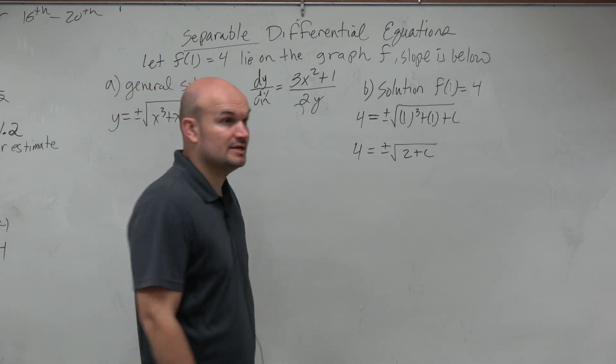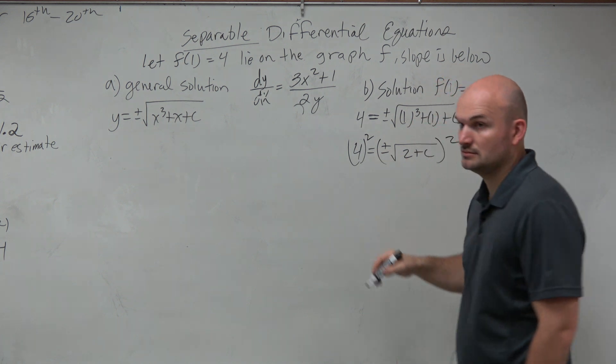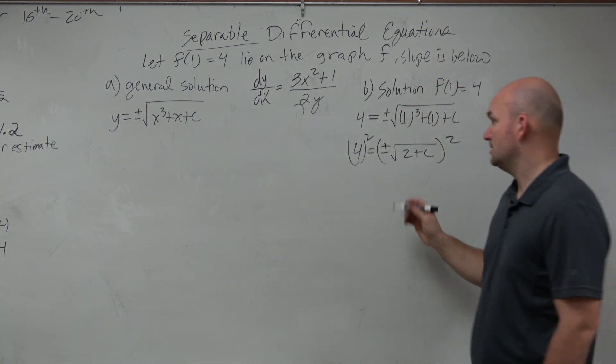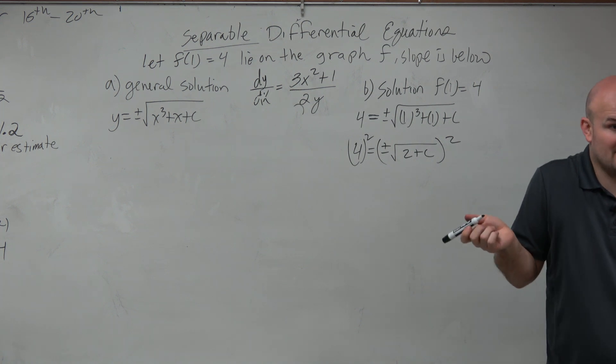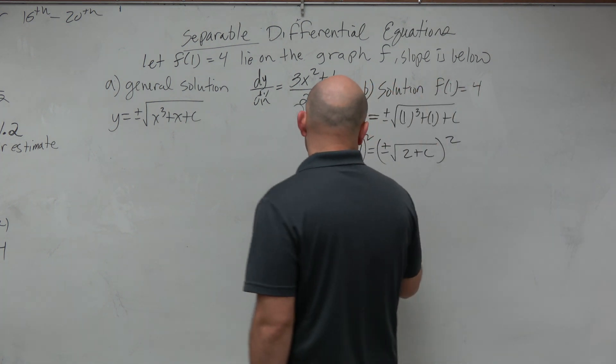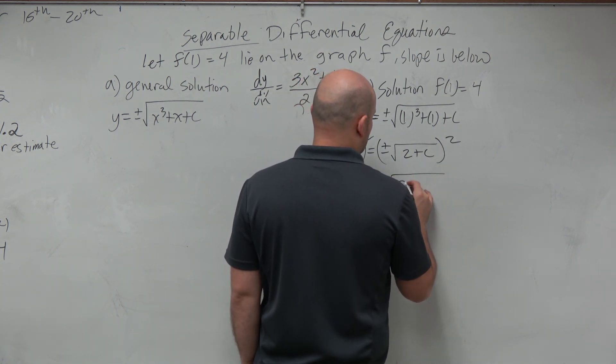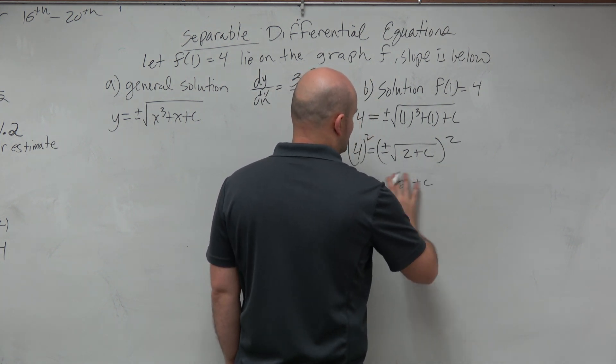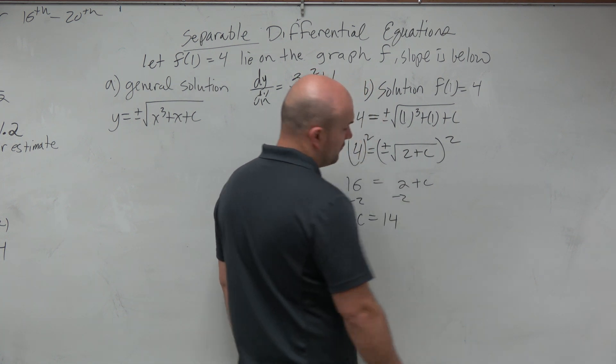Now, to undo the square root, I can just square, right? So it doesn't matter if it's plus or minus. When you square it, that kind of gets rid of the plus or minus, right? Ah, that's kind of nice. So therefore, I have 16 equals square root of 2 plus c. I'm sorry, just 2 plus c. Subtract 2, subtract 2, c equals 14.